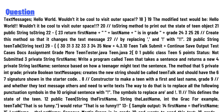Write a program called Teen that takes a sentence and returns a new sentence based on how a teen might text the sentence. The method should be called teenTalk. The constructor creates a new Teen with first and last name, grade, and whether they text message others. To text the teen way, replace all the following punctuation symbols in the original sentence with the sample replacement symbols.